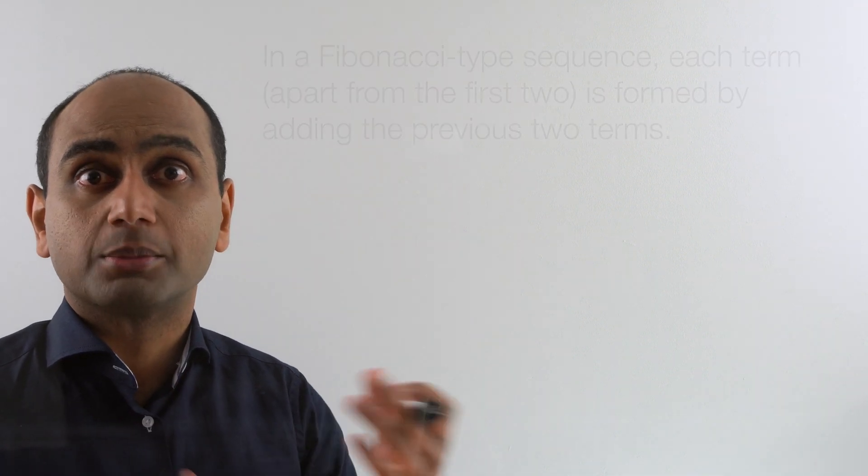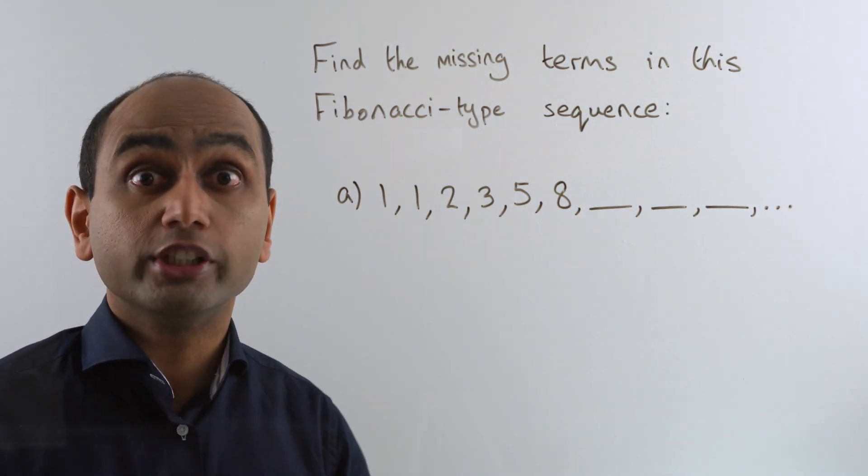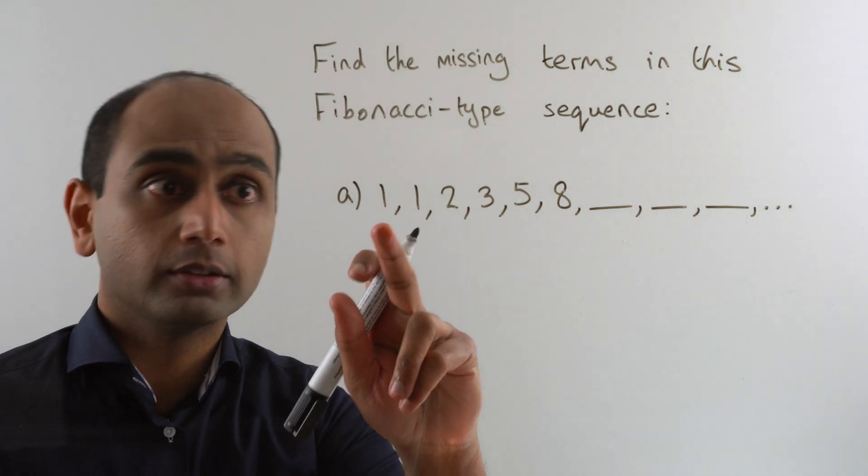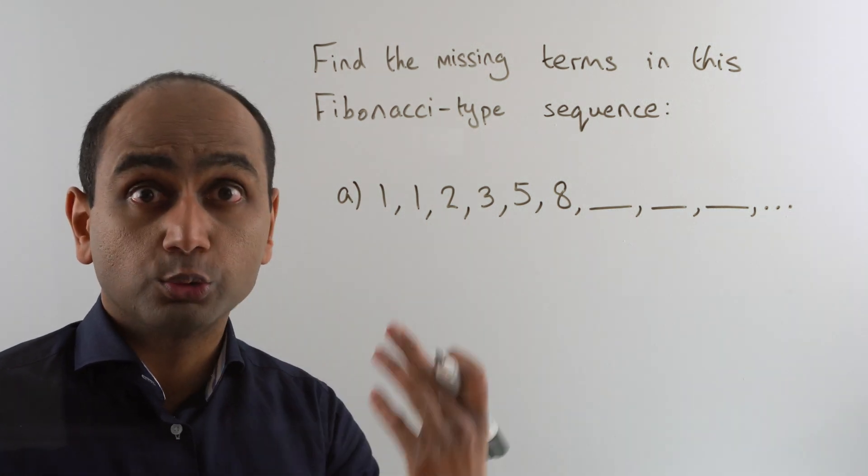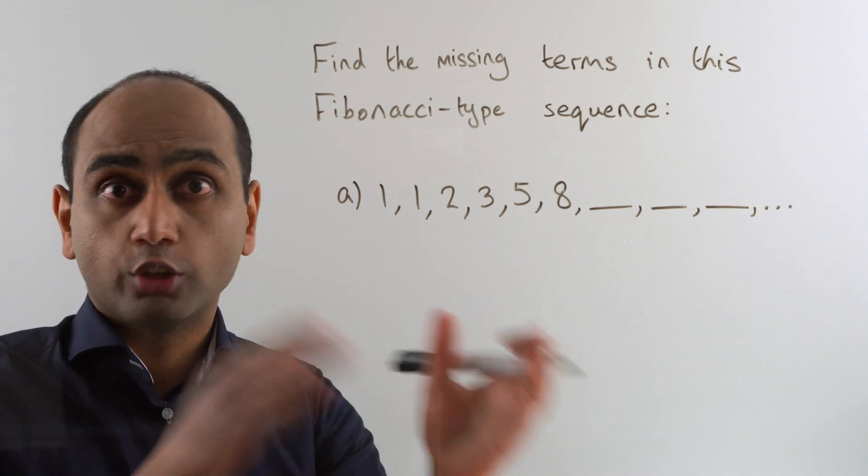Let's take a look at some examples. Here's the first example. This is the original Fibonacci sequence. It starts off with 1 and 1, and you'll notice that each subsequent term is just the sum of the previous two.